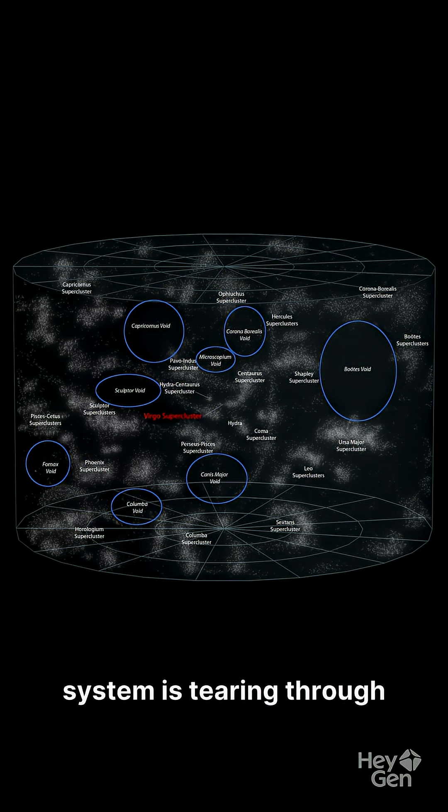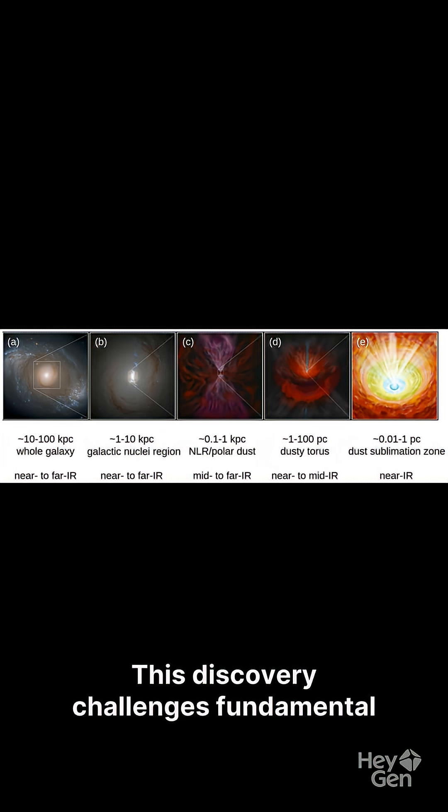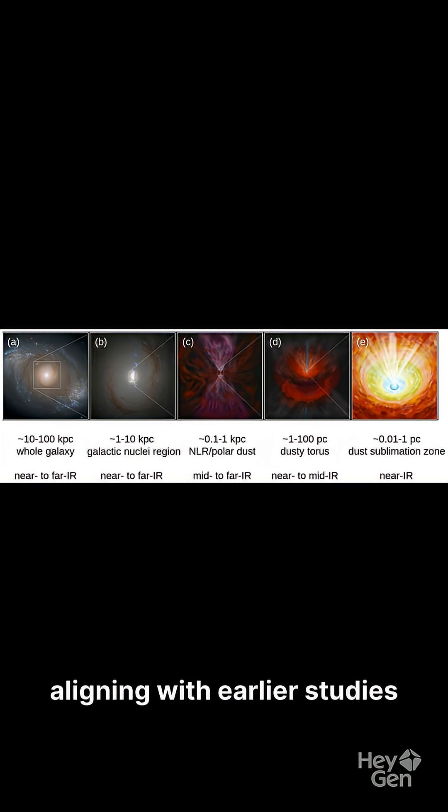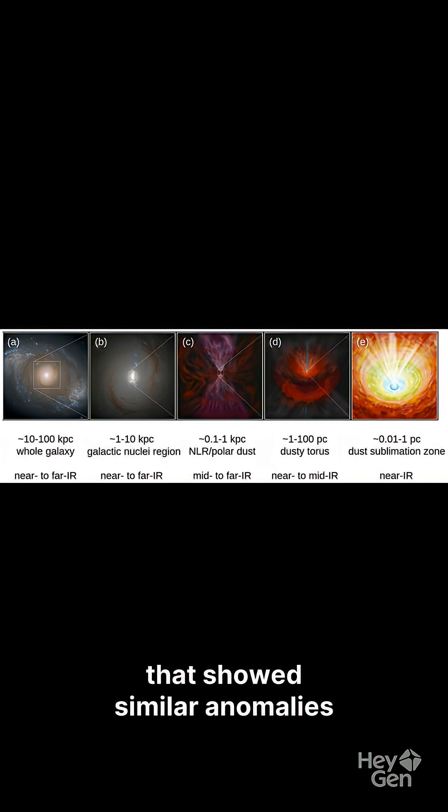Either our entire solar system is tearing through space at speeds previously thought impossible, or the universe itself is not distributed as uniformly as we've always believed. This discovery challenges fundamental assumptions about the cosmos, aligning with earlier studies that showed similar anomalies in infrared data from quasars.